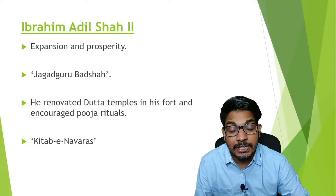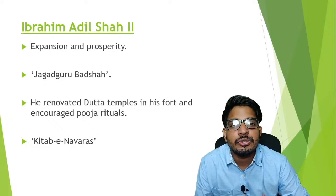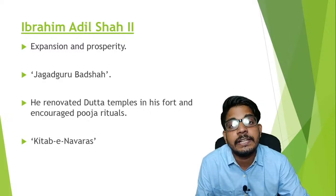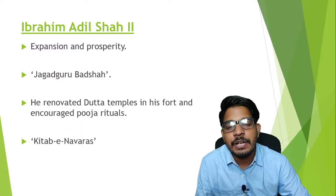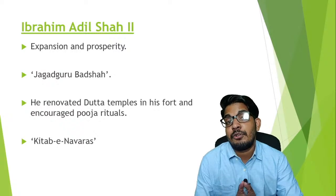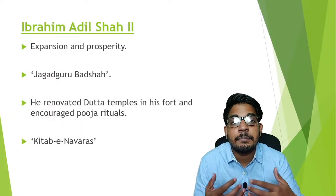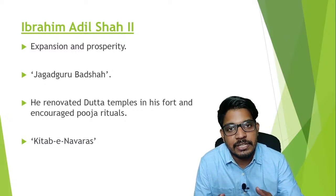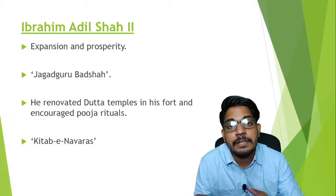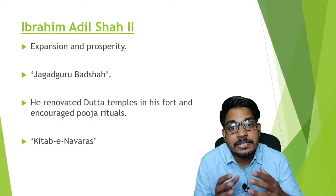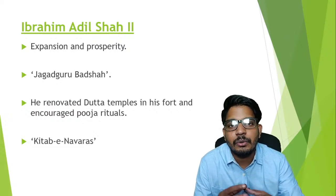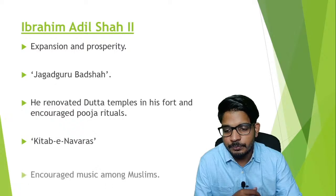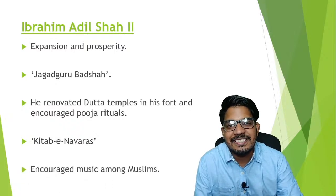Ibrahim Adil Shah II was not just an able ruler — he was very much into culture, art, literature, and finance. He even wrote a book called Kitab-i-Navaras, which is about music. An interesting fact about this book is that he begins by praising and worshipping Hindu gods like Ganesh, Saraswati, and Lakshmi. Even though he was a Muslim ruler, he started his book by praising Hindu gods, which depicts the secular nature of these kings.